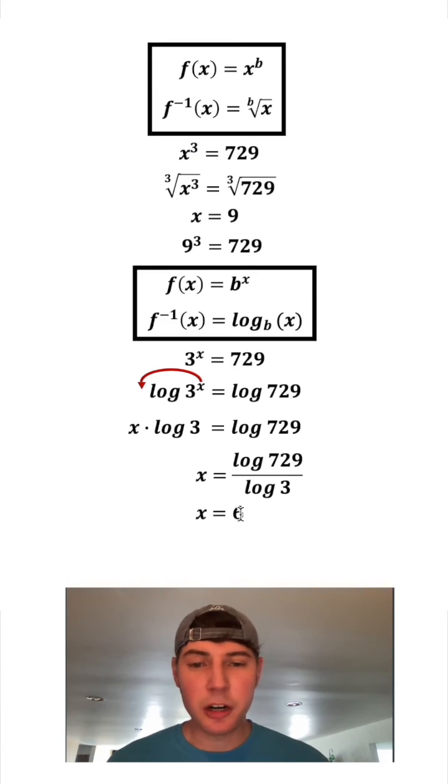And if we want to check our work, we can plug in 6 into this x up here. That would give us 3 to the 6, and that does equal 729. So this process works. Each of these inverses work for the corresponding function. How exciting!